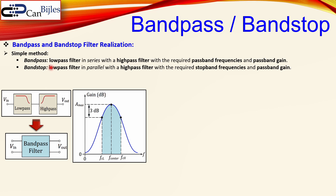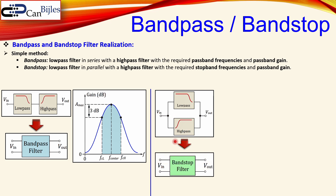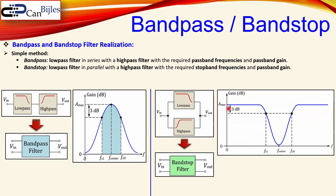That can also be done for the band stop filter. There you use a lowpass filter and a highpass filter in parallel, and then looking at the stop band frequency characteristics and the passband gain. So lowpass and highpass in parallel creates your band stop filter — also called the band reject filter — and this is now the Bode plot for the gain.